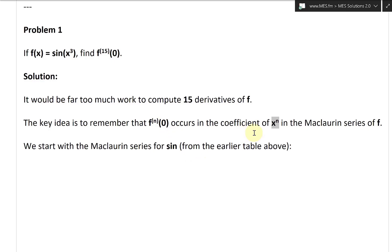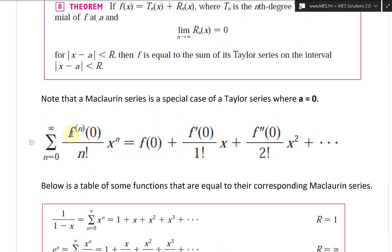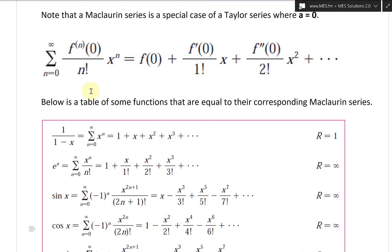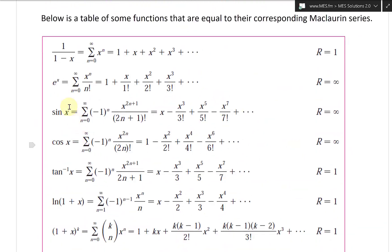We start with the Maclaurin series for sine from the earlier table above. So going back here again, notice that the nth derivative is inside that series. So we go back to the Maclaurin series because we're dealing with x equals zero. So there's a derivative right there, f of the nth derivative.